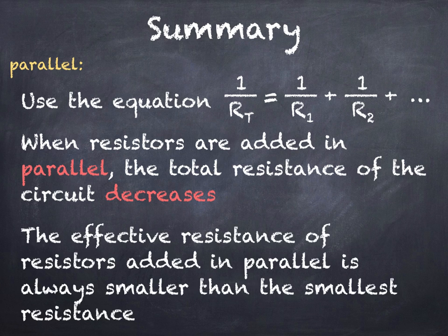Also when we add resistors in parallel the effective resistance is always smaller than the smallest individual resistance. So as an example if we placed a 5 ohm a 10 ohm and a 15 ohm resistor in parallel then the resistance of this arrangement would be less than 5 ohm.